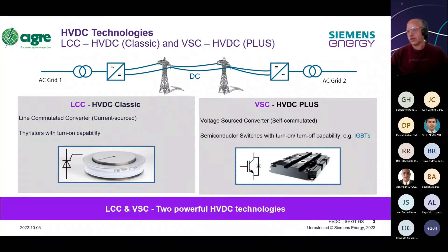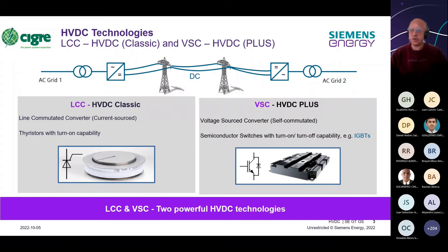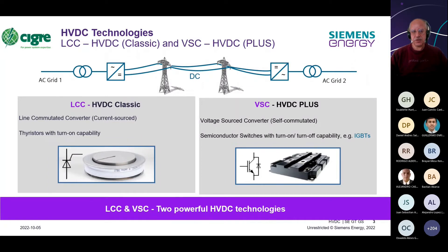In HVDC, there are two technologies currently available. The first is Line Commutated Converters (LCC) using thyristor valves as the switching device — a well-established technology for almost six decades. The other, developed over the last one and a half decades, is Voltage Source Converters (VSC), also called HVDC Plus in Siemens terminology, which uses IGBTs as the main switching device.